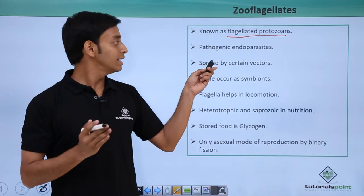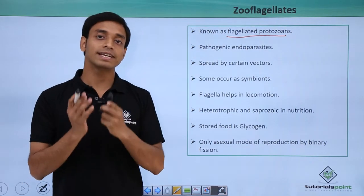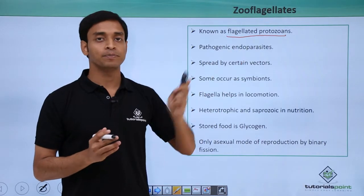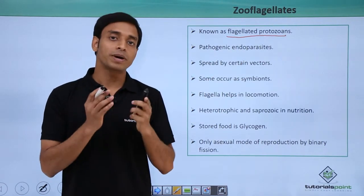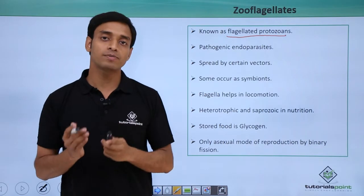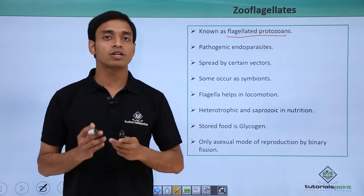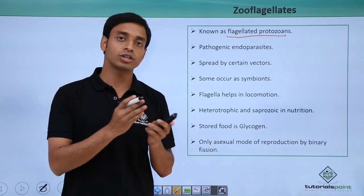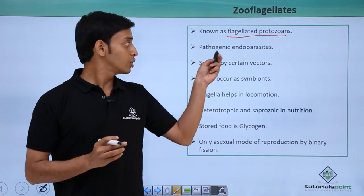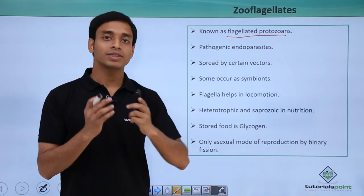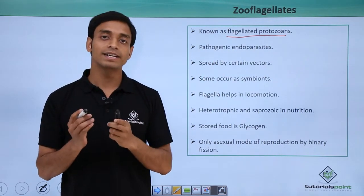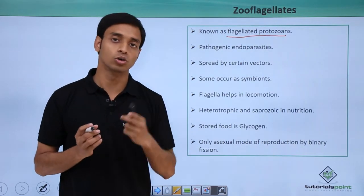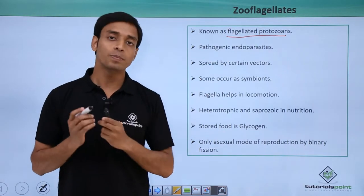These type of zooflagellates are mostly pathogenic, meaning they can cause disease, and they are mostly endoparasitic. Parasitic mode of nutrition is a type where organisms cannot make their own food. They are dependent on other host organisms for nutrition. They are endoparasites, meaning these parasites reside inside the body of the organisms or inside the cells of the organisms or the host. So they are known as endoparasites.